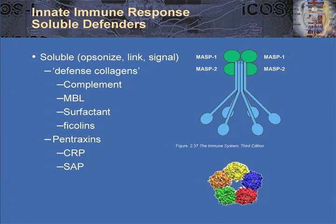There are also soluble weapons. On the top is mannose-binding lectin. This is very similar to C1Q — it's capable of activating complement, and we recognize the carbohydrates specific for certain types of microbes. Down below, this five-structured pentraxin — here we see CRP. We know that CRP, part of the acute phase, is also capable of opsonizing and fixing complement. So there are soluble components to the innate immune system.